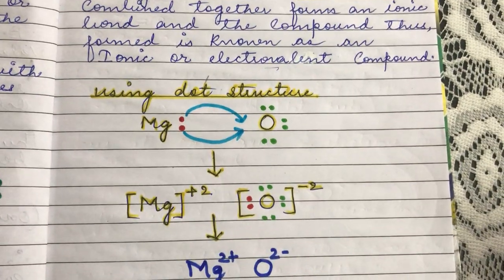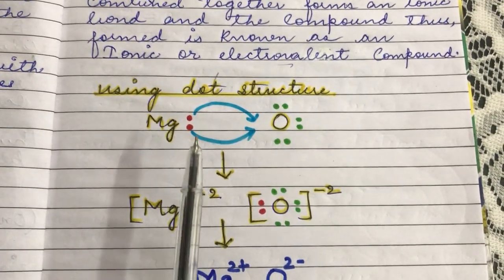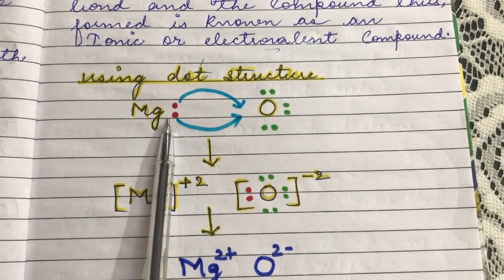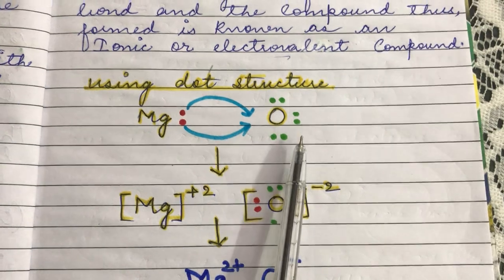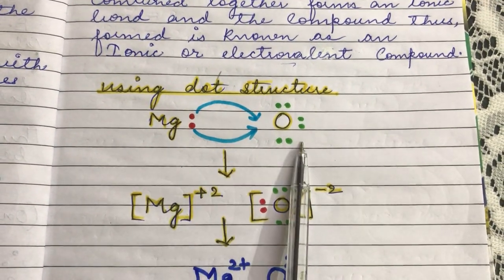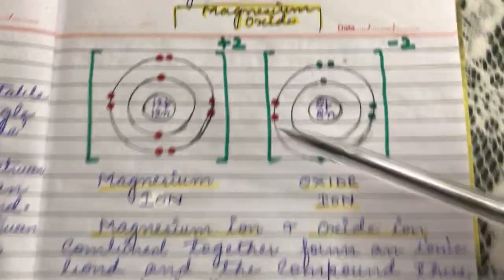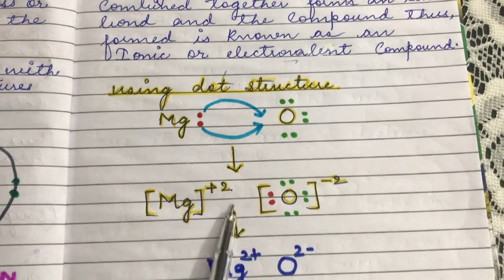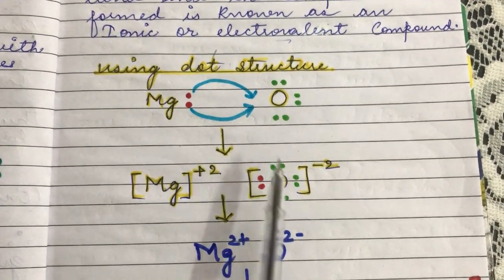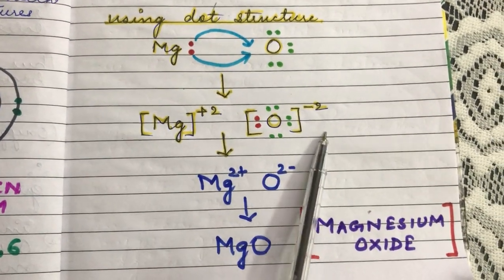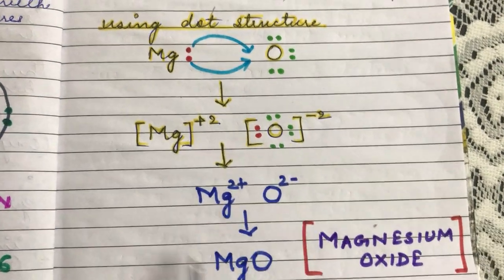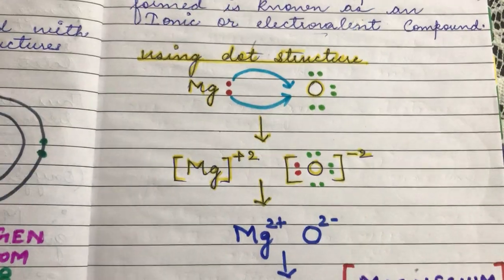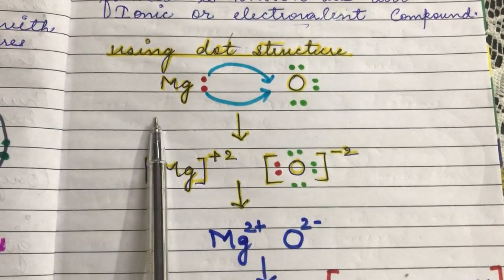Let us understand this using electron dot structures. In dot structures, only the outermost shell — that is, the valence electrons — are shown. Magnesium has 2 valence electrons, shown as 2 dots. Oxygen has 6 valence electrons, shown with 6 dots. When magnesium loses 2 electrons it gets a 2+ charge, and when oxygen gains 2 electrons it gets a 2-negative charge. So the dot structure shows Mg²⁺ and O²⁻ bonding together to form magnesium oxide. This is how electrovalent or ionic bonds are formed between a metal and a non-metal.